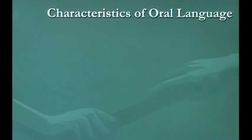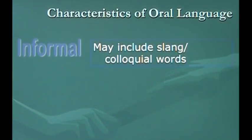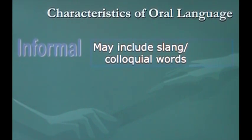Moving on to characteristics of oral language. You've often heard there's a certain way to conduct yourself in certain scenarios, and a lot of this has to do with oral language. One of the most common types is informal language, which may include slang or colloquial words — it's more conversational, laid back, and more likely to be used in social settings with family and friends.